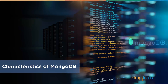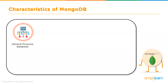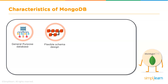Firstly, it's a general purpose database. MongoDB can serve heterogeneous loads and multiple purposes within an application. It also has a flexible schema design — a document-oriented approach with non-defined attributes that can be modified on the fly, which is a key contrast between MongoDB and any relational database.